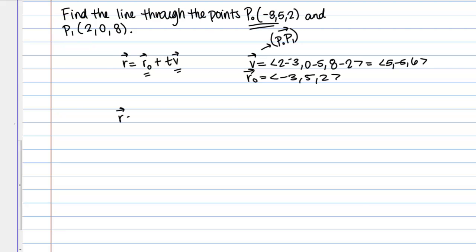Then the equation of my line is going to be given by vector R₀, so <-3, 5, 2>, plus T times vector V, which was <5, -5, 6>.